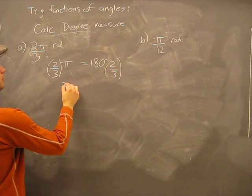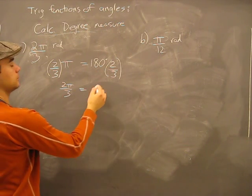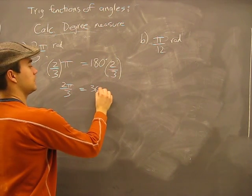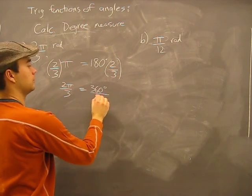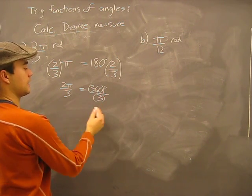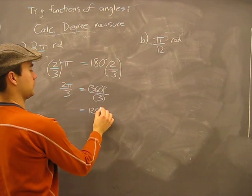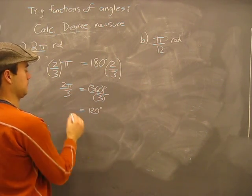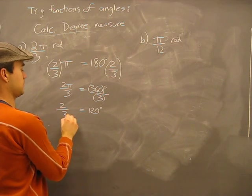Two-thirds times 2π over 3 equals, well, let's see, 360 degrees in the numerator over 3. 360 divided by 3 cancels out to 120. The degree symbol didn't go anywhere, so it's still there. There we have it, just like that.